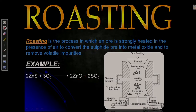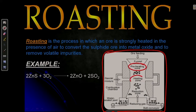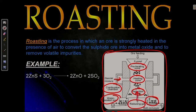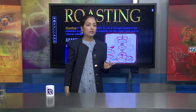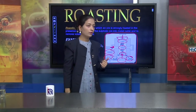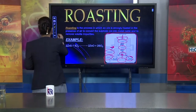In the reverberatory furnace for roasting: there is a preheating zone, a heating zone, and a reduction zone. There is a combustion chamber, a water-sealed pool, and a reducing gas inlet. Ore is fed through a funnel, heated, and in the presence of excess air — gas is continuously supplied — it is converted into the oxide of the ore.